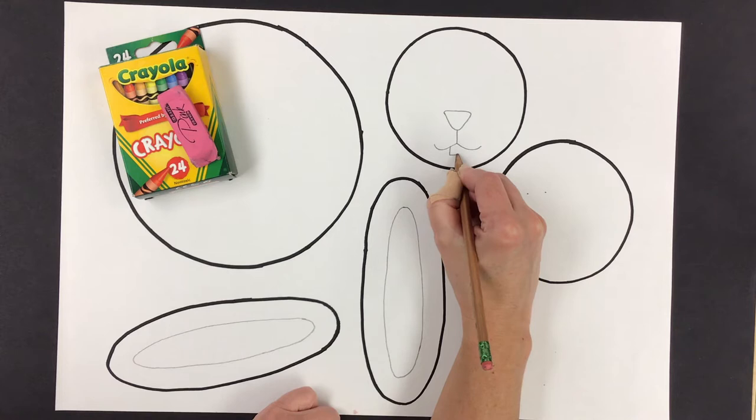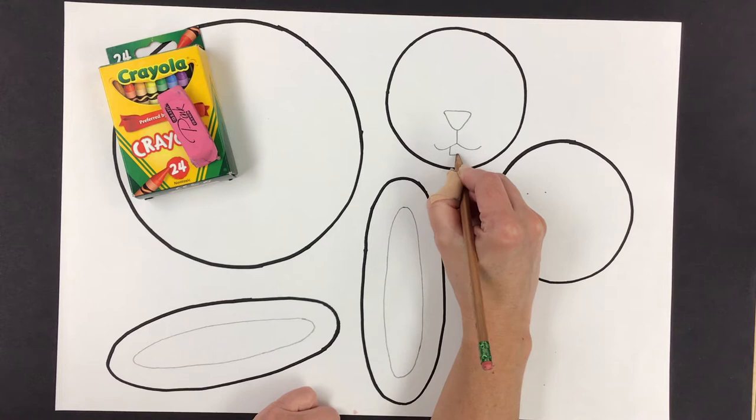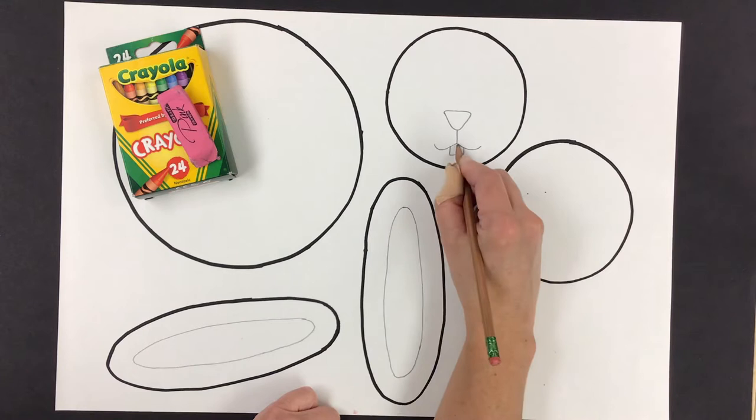So I will make a square underneath the mouth. And because rabbits have two very large teeth for digging into wood and chewing vegetation, we put a line between the two.